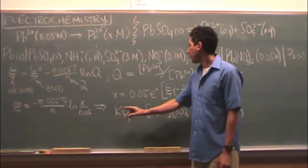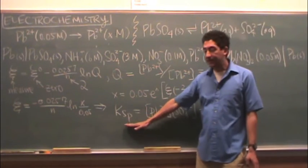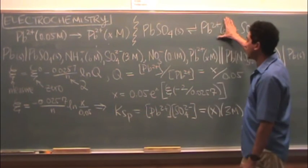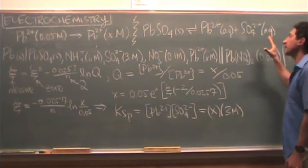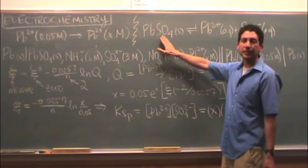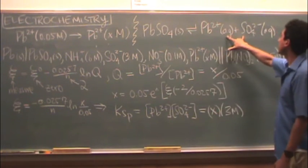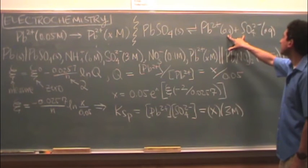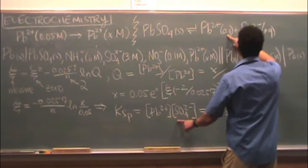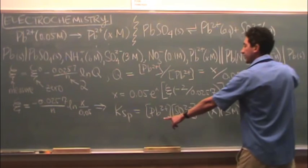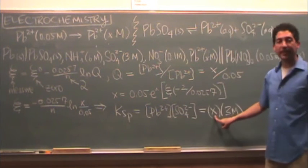And so what you're going to do is, again, find Ksp. It's for this reaction. So it's products over reactants. The reactant's not included because it's a solid. So the products are all you have in the numerator. So it's lead 2 plus times the sulfate. The lead 2 plus is the unknown. That's X.